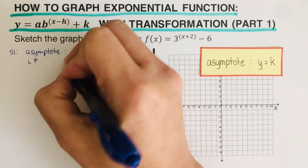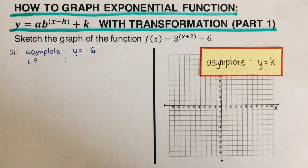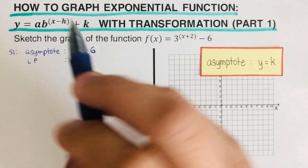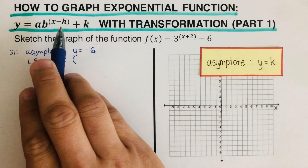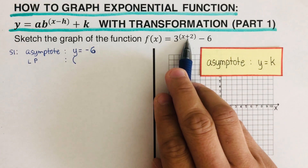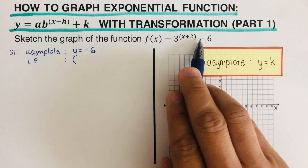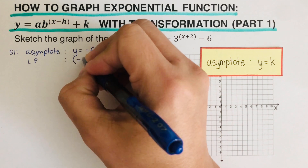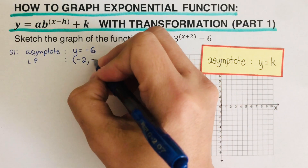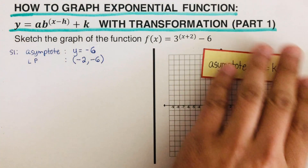Now we determine the locator point — I'll write LP for locator point. To find it, we use h and k but we switch and keep: we switch the sign of h. So the locator point comes out to negative two and negative six.